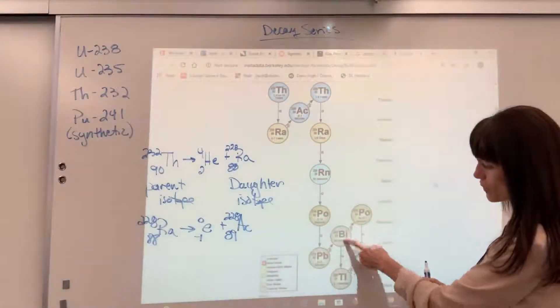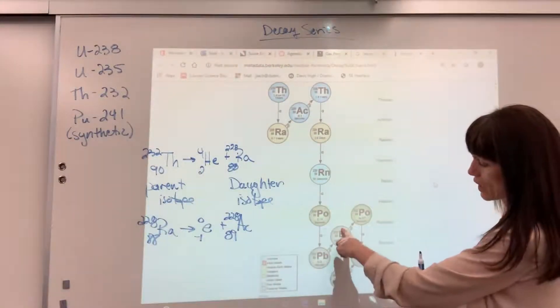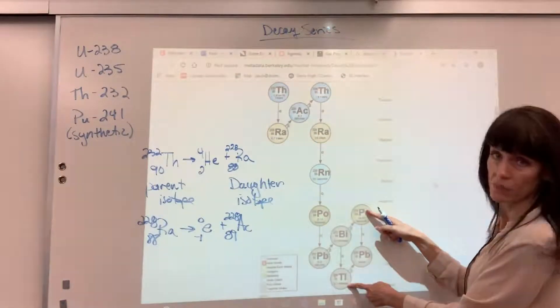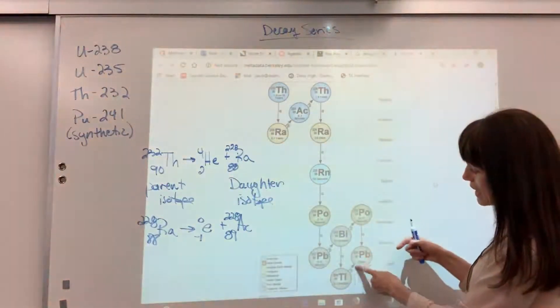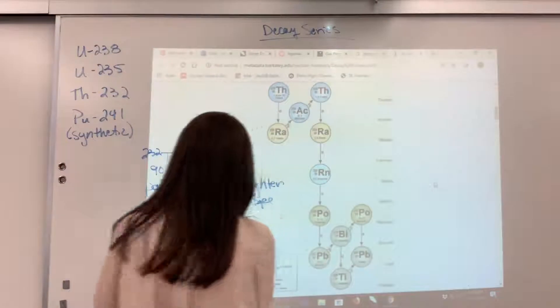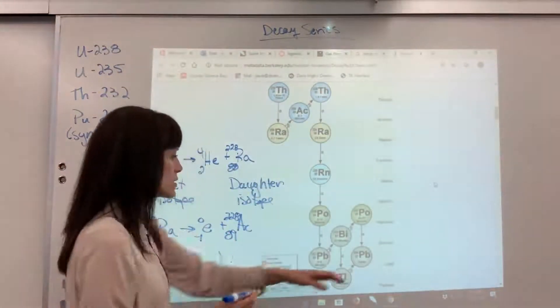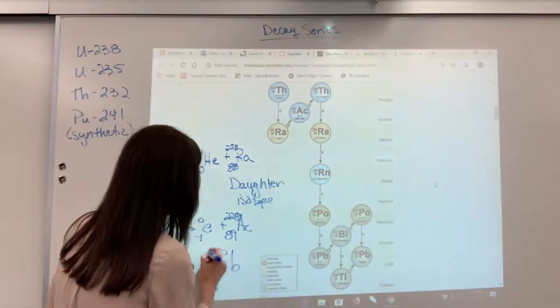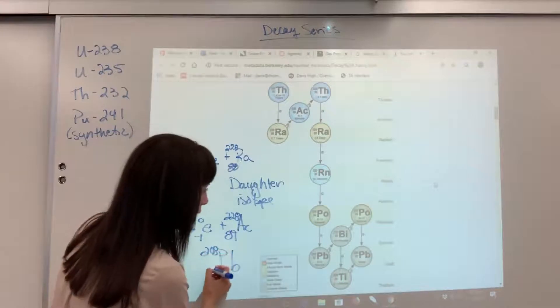And then here there's a choice. When it hits bismuth, bismuth can either undergo an alpha decay or a beta decay, but notice it ends at, finally, that final daughter isotope is going to be a lead 208.